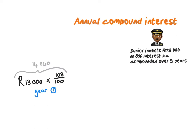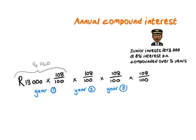Instead of writing it all out and getting an answer each time, I can merely repeat this fraction five times. My previous answer multiplied by 108 over 100 gives me year two. Doing that again gives year three. Doing it another time gives year four — remember it's interest on interest. And doing it one more time gives the final answer for year five. You can press equals in between on your calculator.